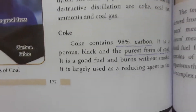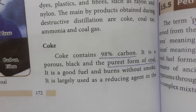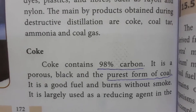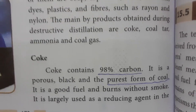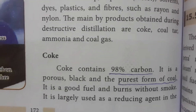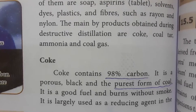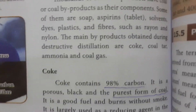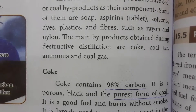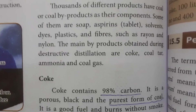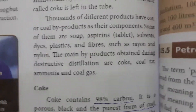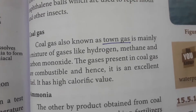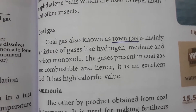Coke is the purest form of coal. It contains 98% carbon. It is very black and has a porous structure. So the purified and porous black form of coal is coke.